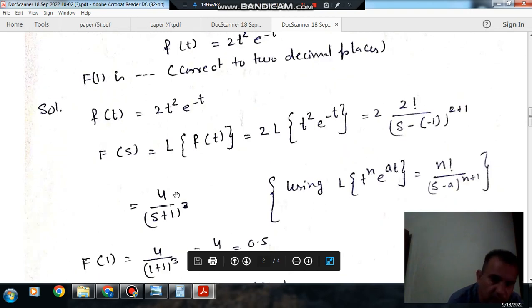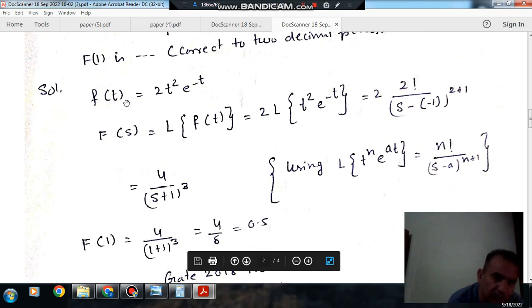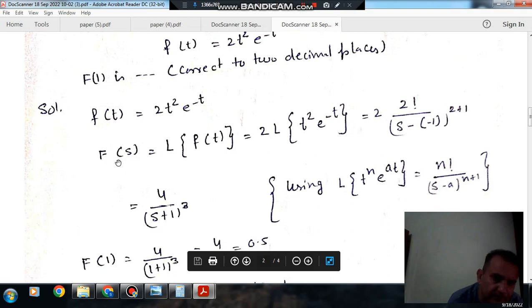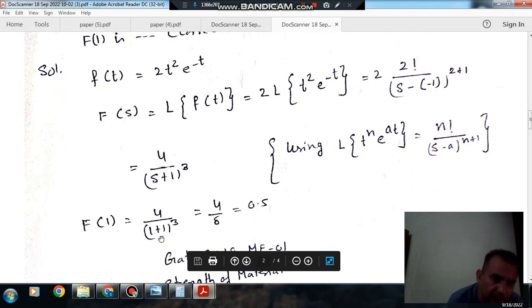So it will be 4 by (s + 1)³. Now we put s equal to 1. Then it will be 4 by 2³, that is 4 by 8, that is 1/2.